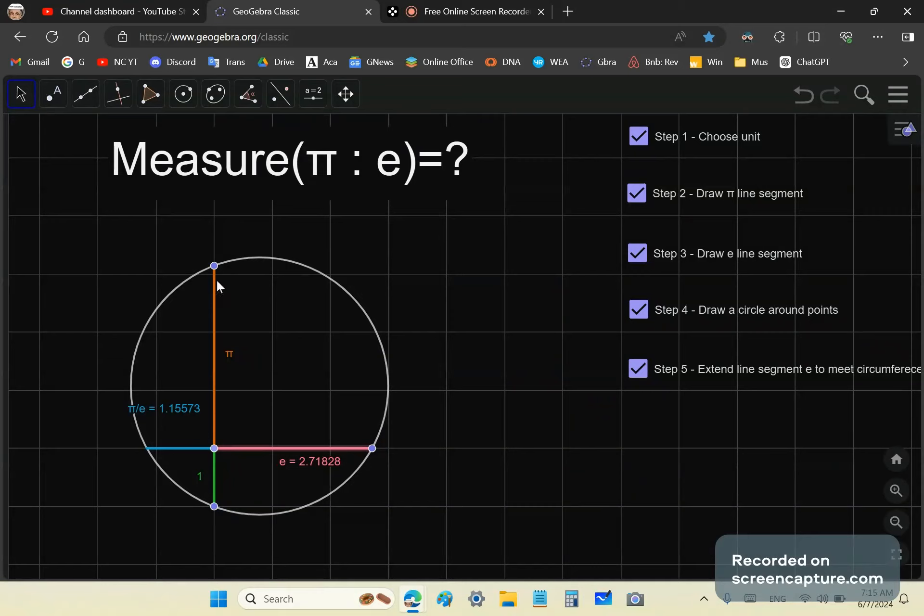And likewise, you could say pi divided by this line segment here will give you the number e. Pi divided by pi over e is e. This is how we got numbers, by the way.